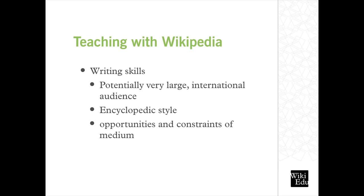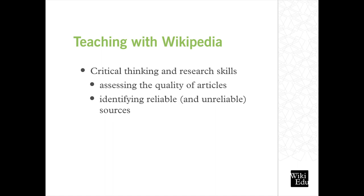Writing a Wikipedia article is both deceptively simple and deceptively complex. It's the encyclopedia anybody can edit, but it takes some work to contribute high-quality content. Students have to exercise critical thinking and research skills — for example, in assessing the quality and coverage of existing Wikipedia content, looking for opportunities or topic gaps. They're also challenged to evaluate the quality of sources, to identify reliable as well as unreliable sources, and to cite and summarize them effectively.